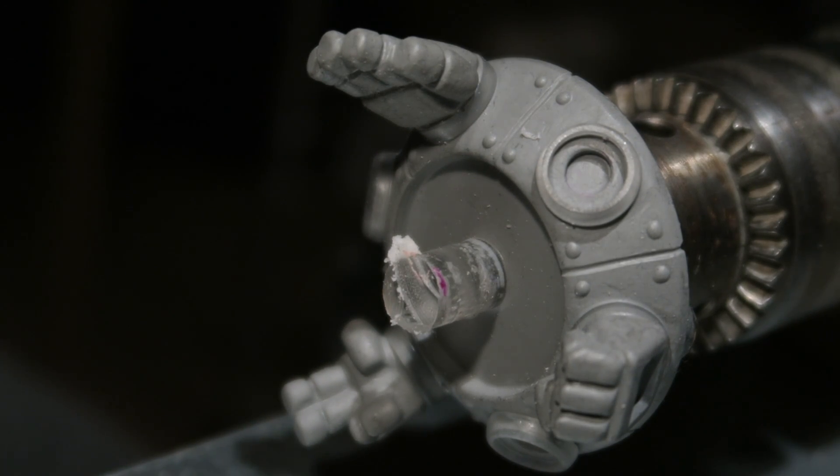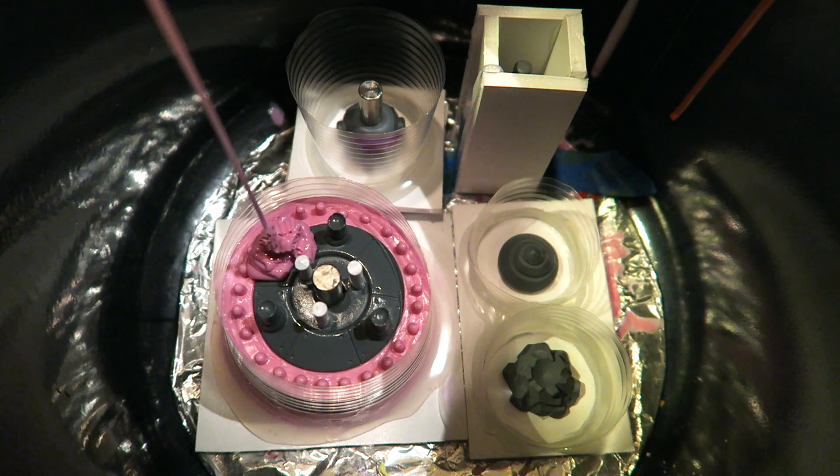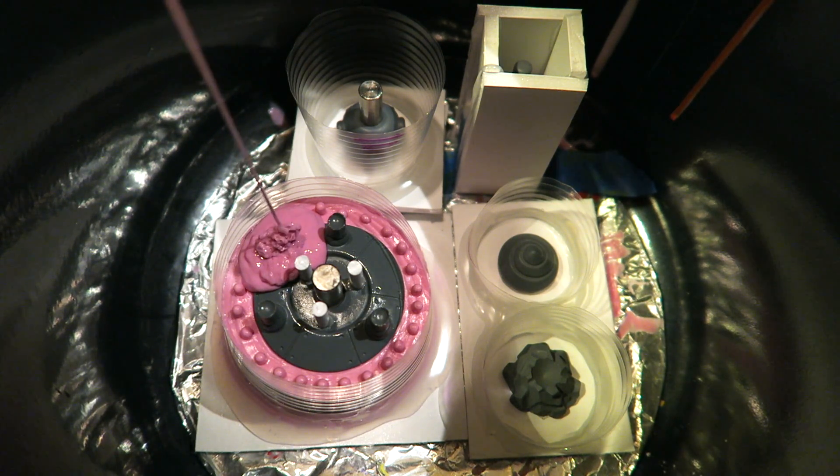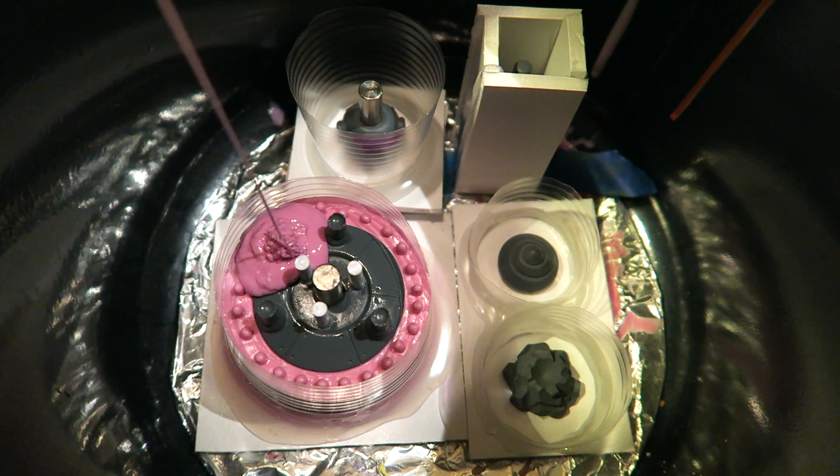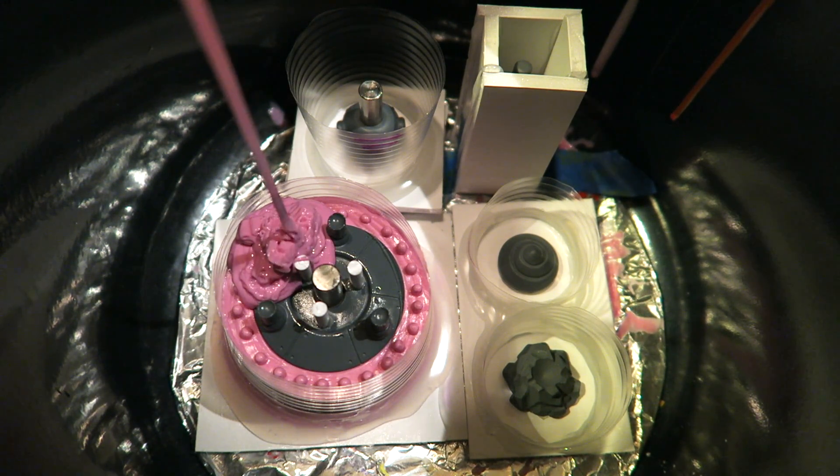The next step is to prepare them for mold making. This is a part of the process that not many people get to see. I mix a batch of silicone rubber and pour it around the master sculpts. The rubber hardens and after I take the pieces out I am left with molds for my toy.